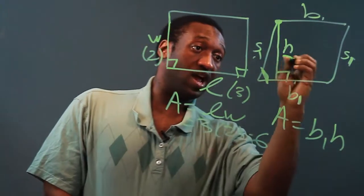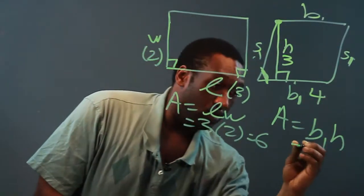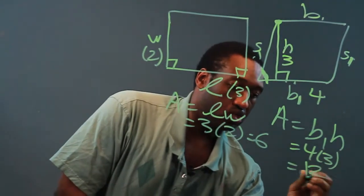For example, let's say the height was 3 and base 1 was 4. We would get 4 times 3, which is 12 square units.